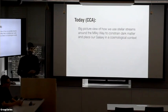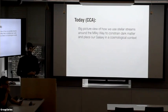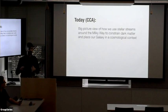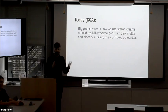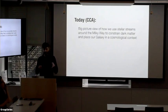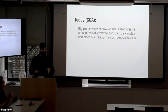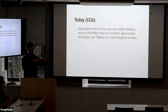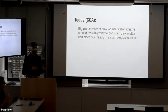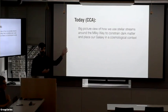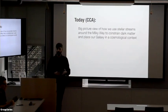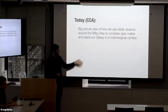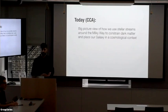I thought I'd start by setting the context for today since I'm giving two talks — one here and one at NYU. This is a demonstration of what happens when you write a talk abstract a little too far in advance, because since writing my abstract I actually scoped out a little bit. Today I'll give the big picture view of how we're using stellar streams to uncover the history and evolution of the Milky Way, and to map out the dark matter distribution as well.